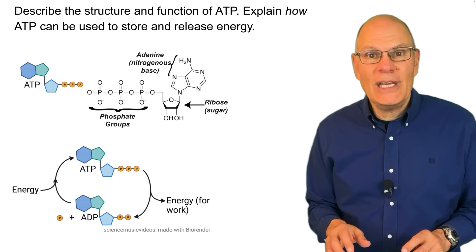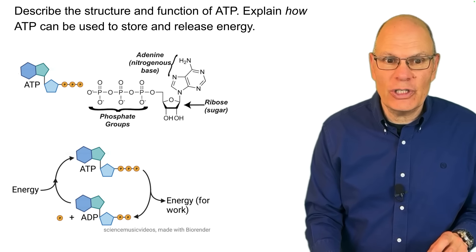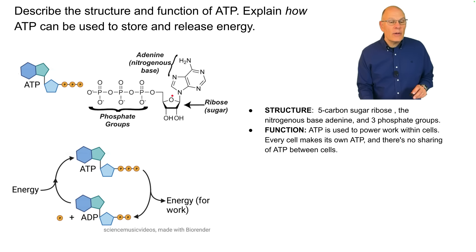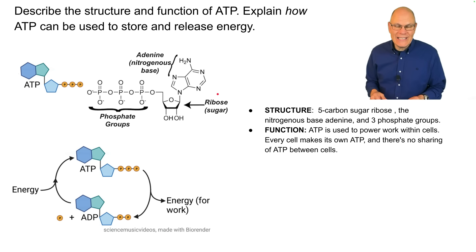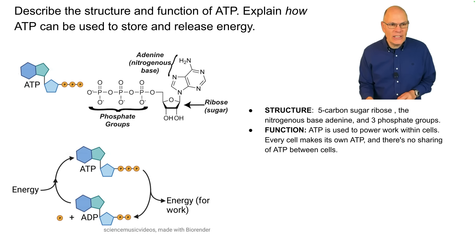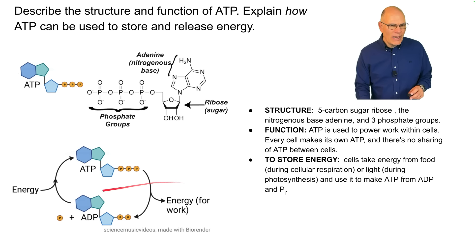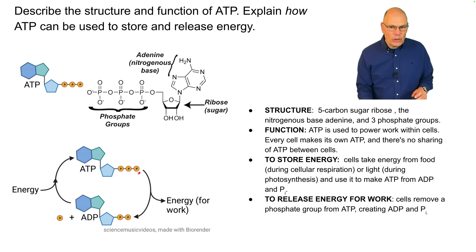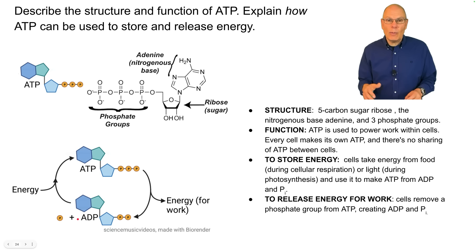Describe the structure and function of ATP, and explain how ATP can be used to store and release energy. The structure of ATP involves a five-carbon sugar called ribose, a nitrogenous base called adenine, and three phosphate groups. The function of ATP is to power work within cells — every cell makes its own ATP, with no sharing between cells. To store energy, cells use energy from food during cellular respiration or light during photosynthesis to combine ADP and a phosphate group into ATP. To release energy, cells remove the terminal phosphate group from ATP, creating ADP and phosphate and making energy available to do cellular work.